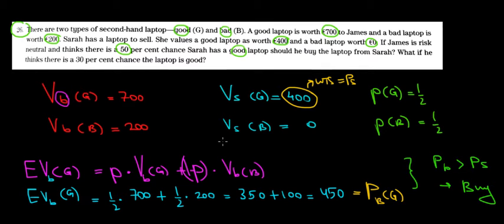Now let's have a look at the second part of the question. What if the buyer James thinks there is only a 30% chance that the laptop is good? Basically, the same logic applies - he'll take into account the probability.